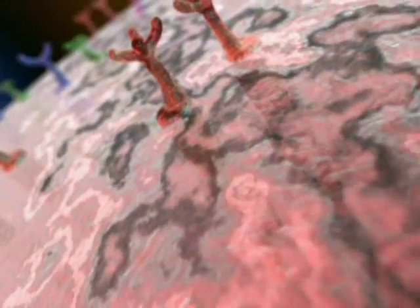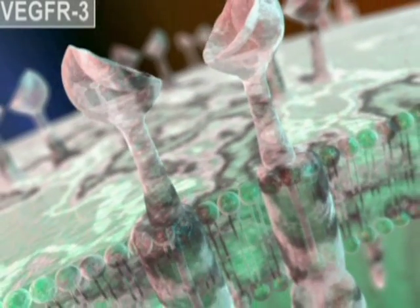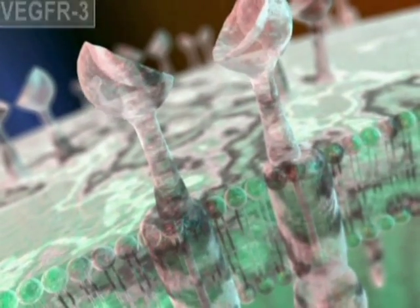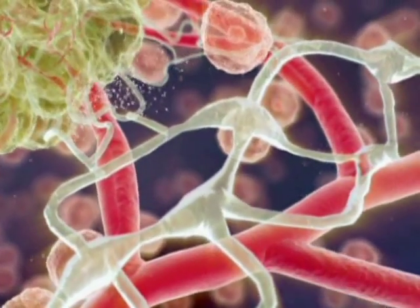Three receptors have been identified. VEGF receptors 1 and 2 are found on the endothelial cells of blood vessels, while VEGF receptor 3 is on the endothelial cells of lymphatic vessels. Lymphatic vessels help drain interstitial fluid from tissue and are a potential route by which cancer cells metastasize.